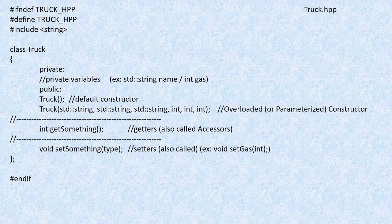First let's look at an overview of a header file. The first thing you want to notice is that we have ifndef and define statements and an endif at the bottom of the file to make sure that it compiles correctly when linking to our other files. Inside the class we have our private and public areas and at the bottom we have our semicolon. In our private area we will have our private variables declared — strings, floats, integers, or arrays — whatever is going to be part of our objects. In our public section we will have our function calls for the constructors, the getters, and the setter functions that we will then implement in our CPP file.